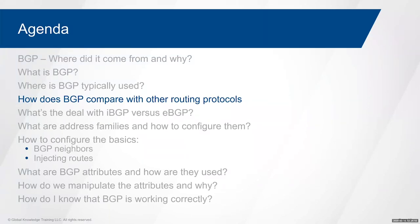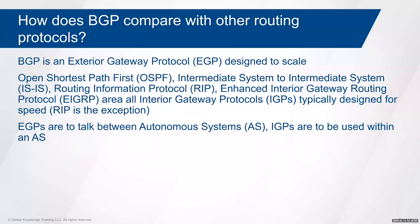How does BGP compare with other protocols? Routing protocols are classified in several ways. At the CCNA level we look at classful versus classless — whether they advertise the subnet mask. All routing protocols today are classless. We also look at distance vector versus link state — distance vector is hop-by-hop, while link state provides a full topology view. The only link-state protocols are OSPF and IS-IS; everything else by definition falls into the distance vector category.